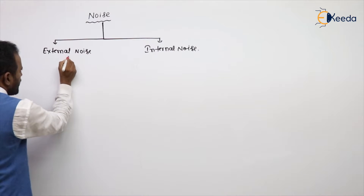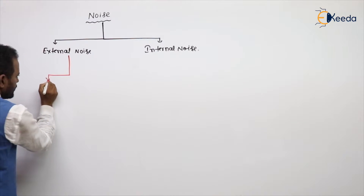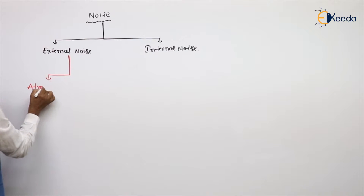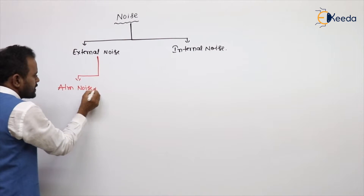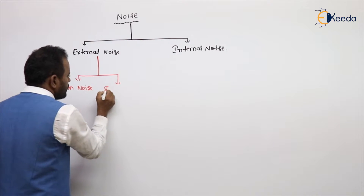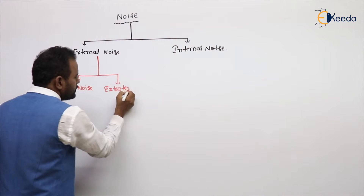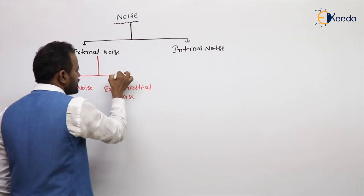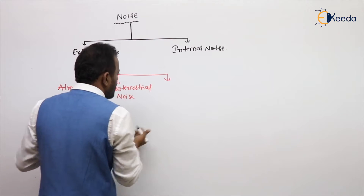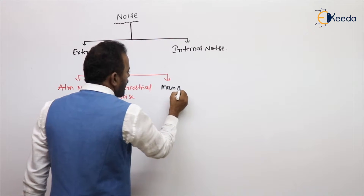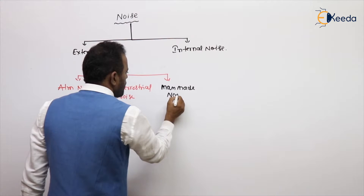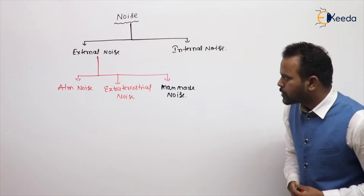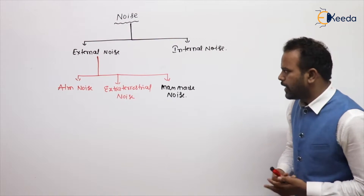This external noise is broadly categorized into three types. What are the three types of external noises? One is atmospheric noise, second is extra-terrestrial noise, and the third is called industrial noise, or generally man-made noise. These are the three types.